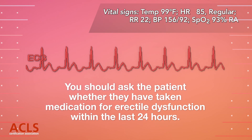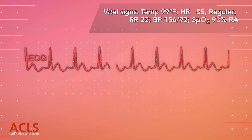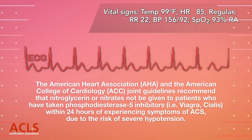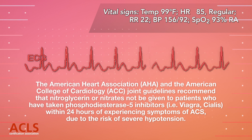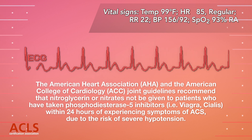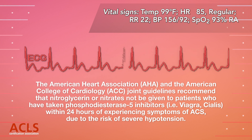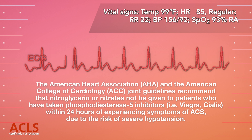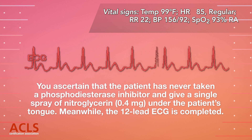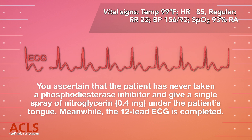You should ask the patient whether they have taken medication for erectile dysfunction within the last 24 hours. The American Heart Association and the American College of Cardiology joint guidelines recommend that nitroglycerin or nitrates not be given to patients who have taken phosphodiesterase 5 inhibitors within 24 hours of experiencing symptoms of ACS, due to the risk of severe hypotension. You ascertain that the patient has never taken a phosphodiesterase inhibitor and give a single spray of nitroglycerin under the patient's tongue.